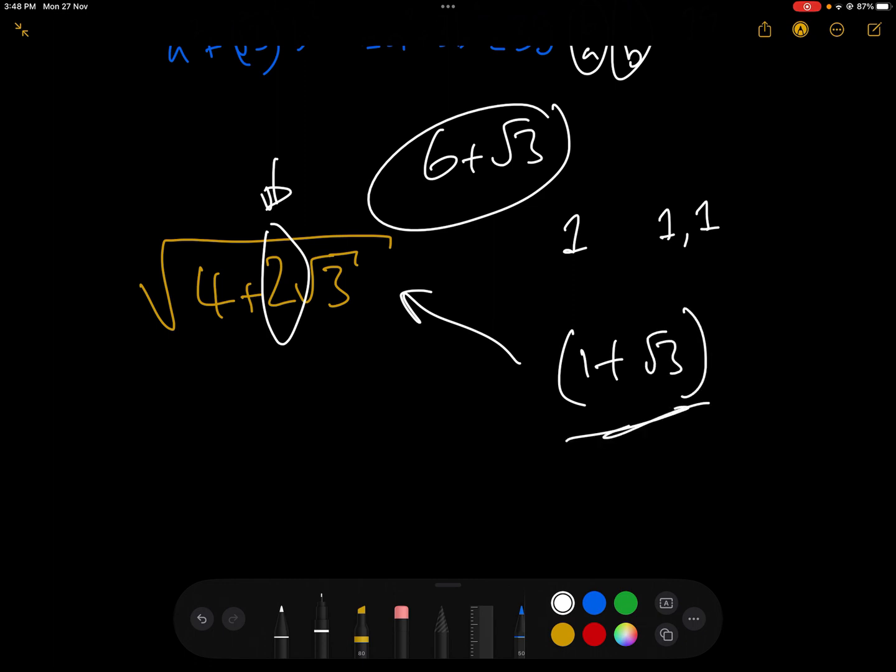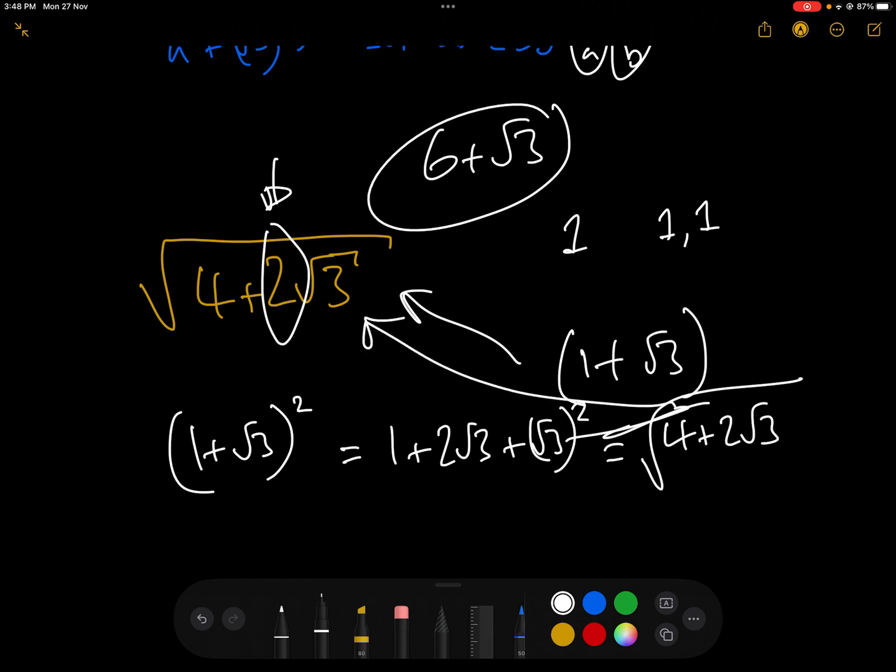And just to check, 1 plus root 3 squared is 1, add 2 root 3, add root 3 squared, which equals 4, add 2 root 3. And so therefore, the square root of that is correct. Et voila!